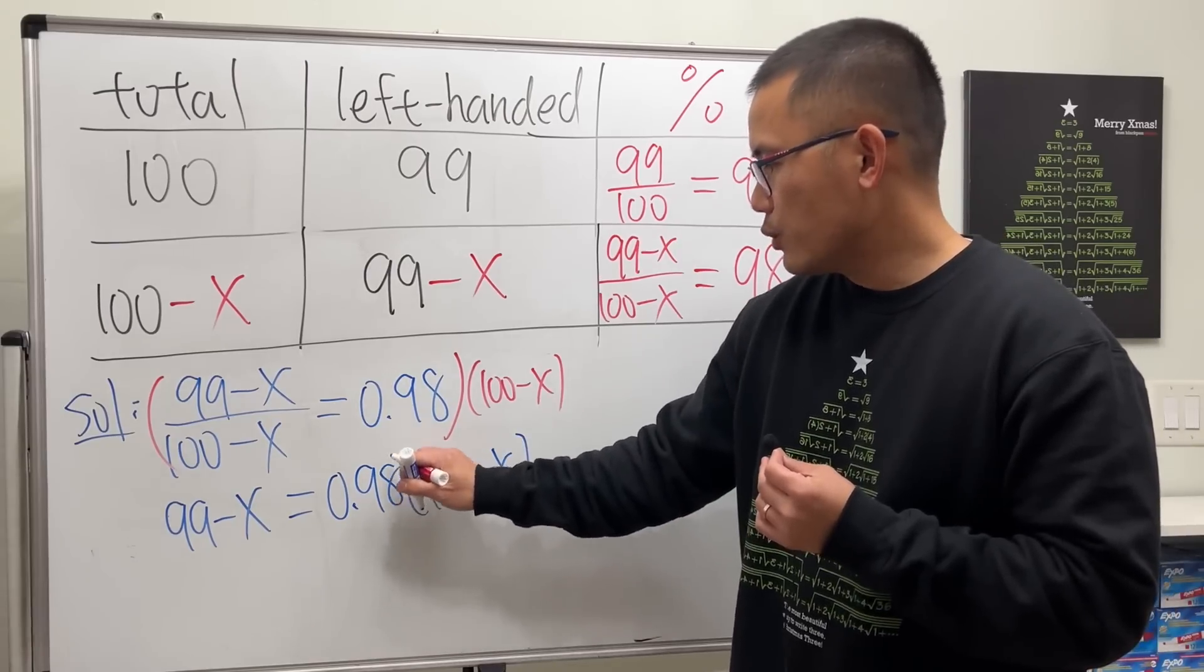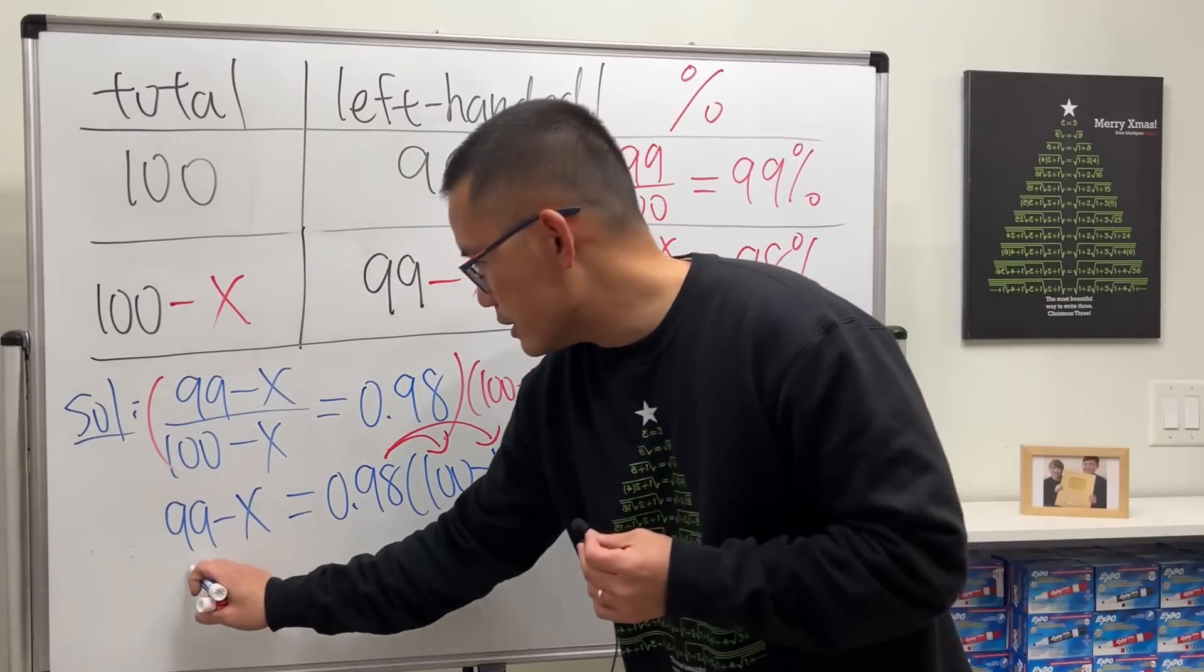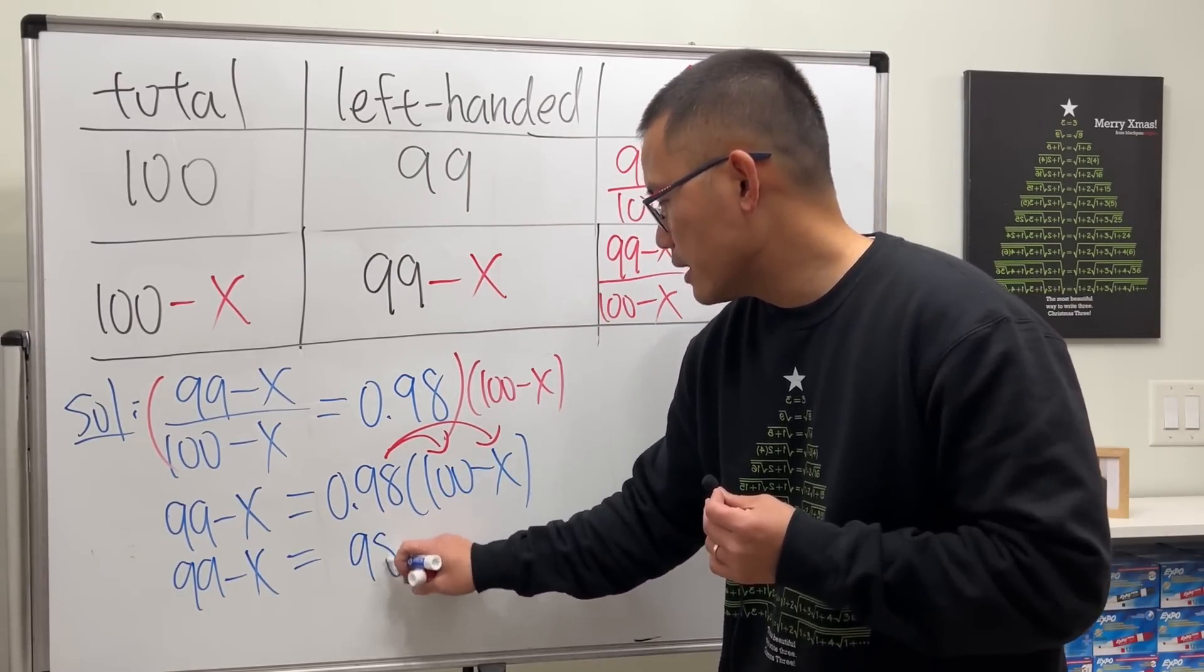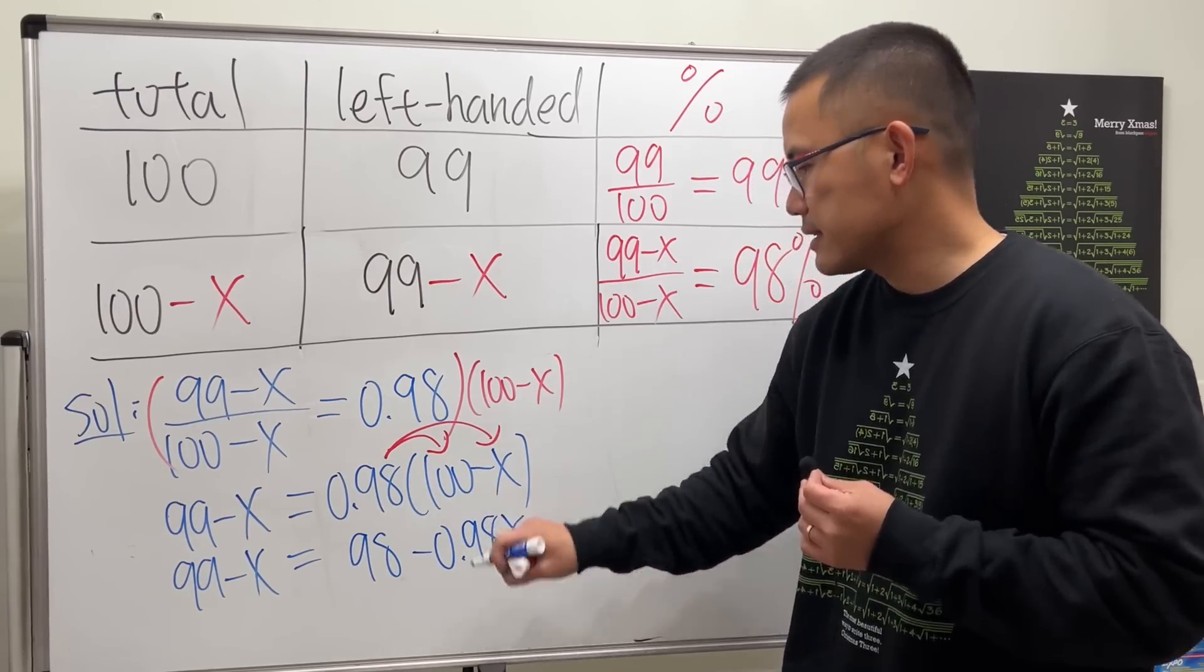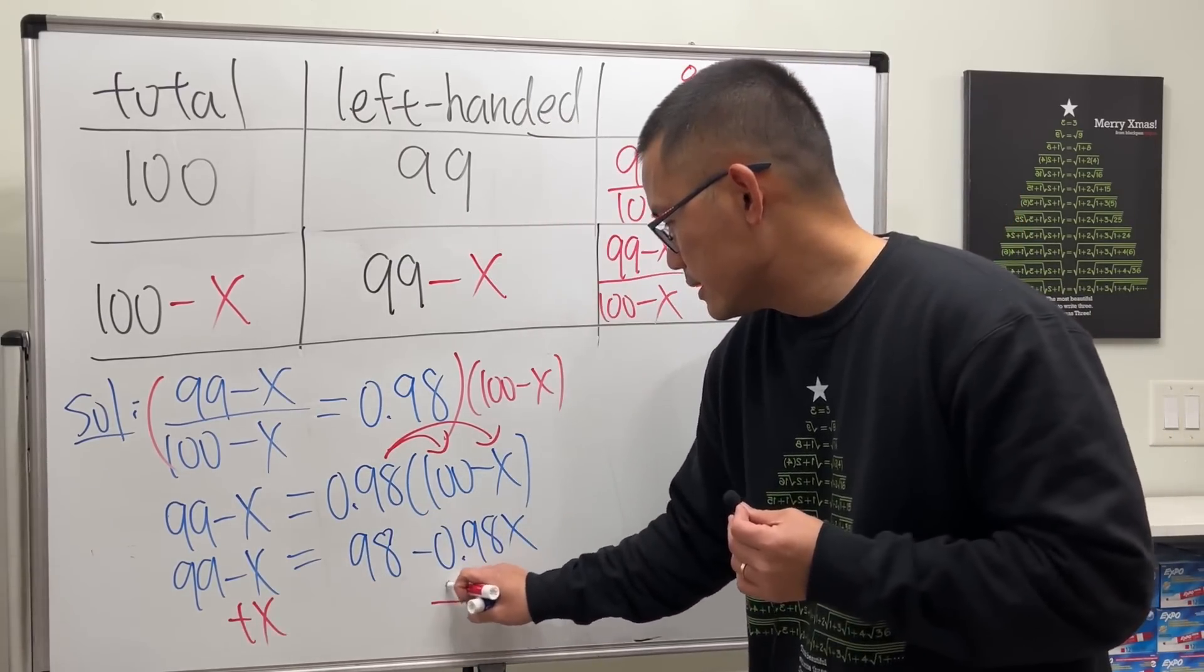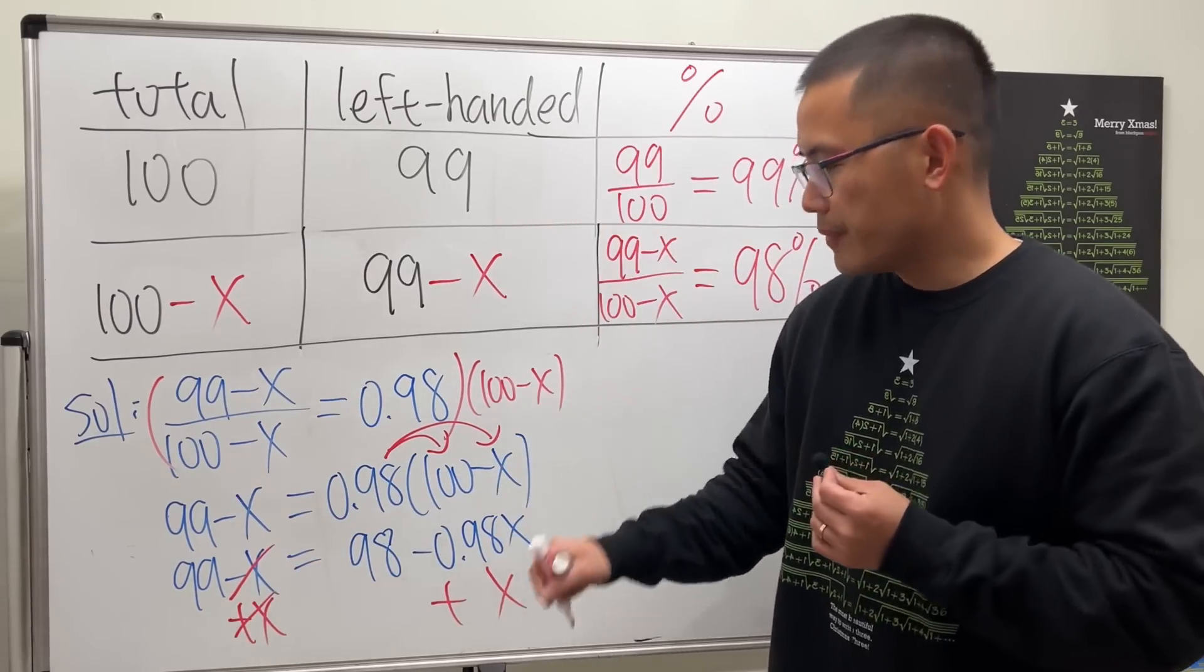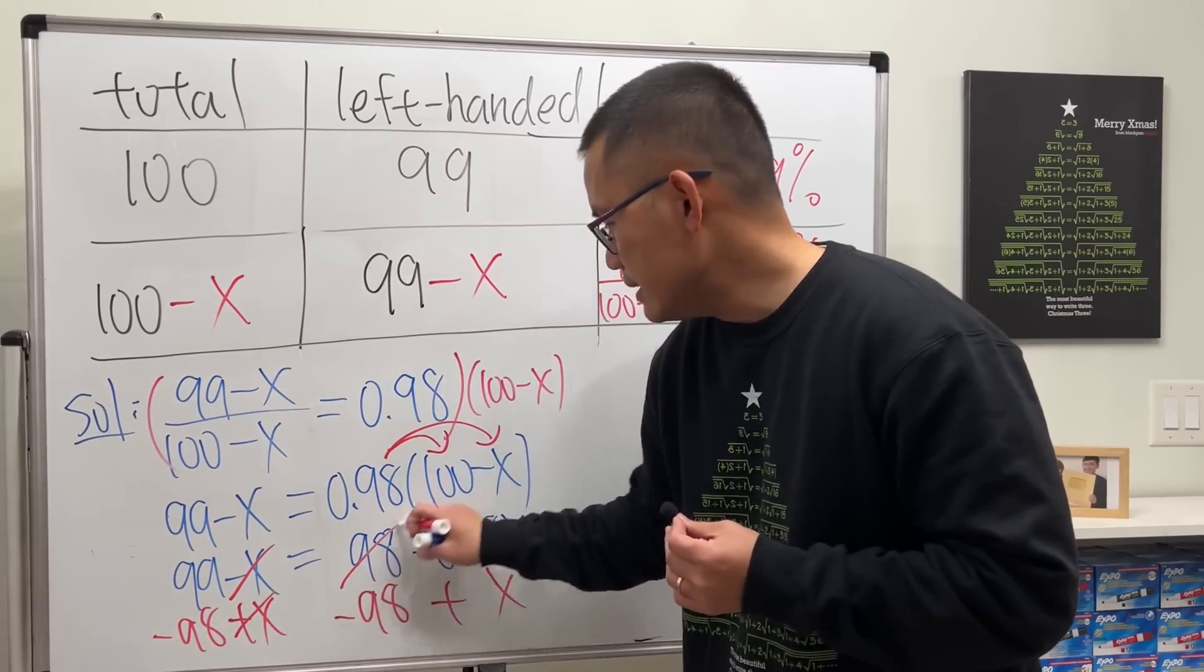We have to distribute the 0.98 into the parentheses. So this is 99 minus x equals 98 minus 0.98x. Now we can add x to both sides, and this and that will cancel.